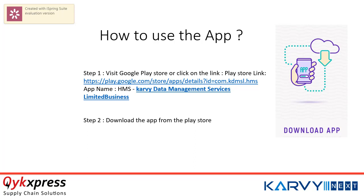How do you download this app? To download this app, you need to go to your mobile Play Store and search for the application called HMS Carby Data Management Services Limited Business. Once you find this application, you need to download it and install it on your mobile phone.